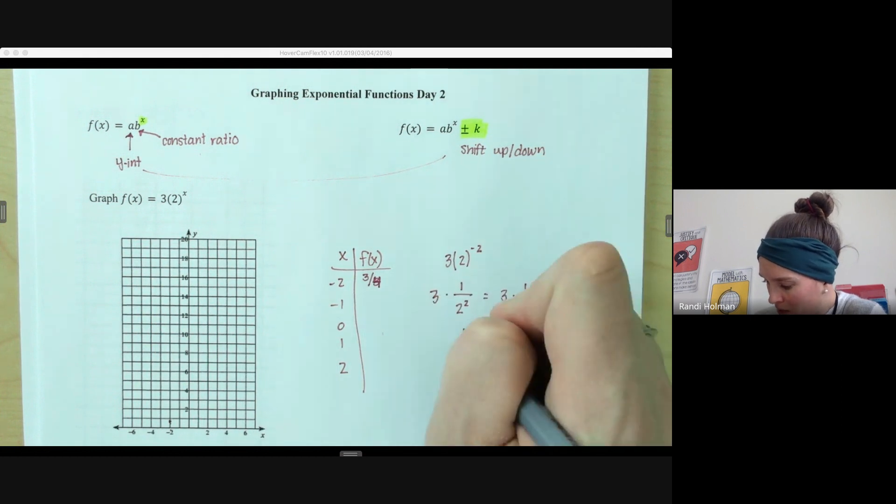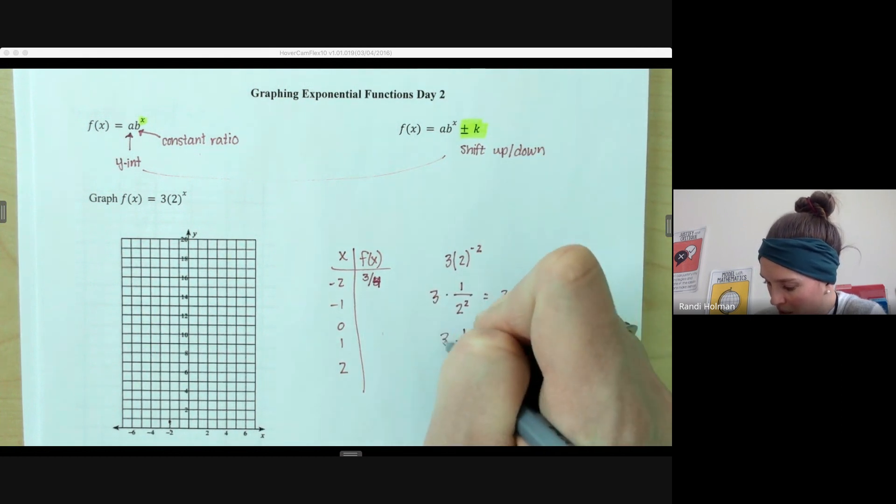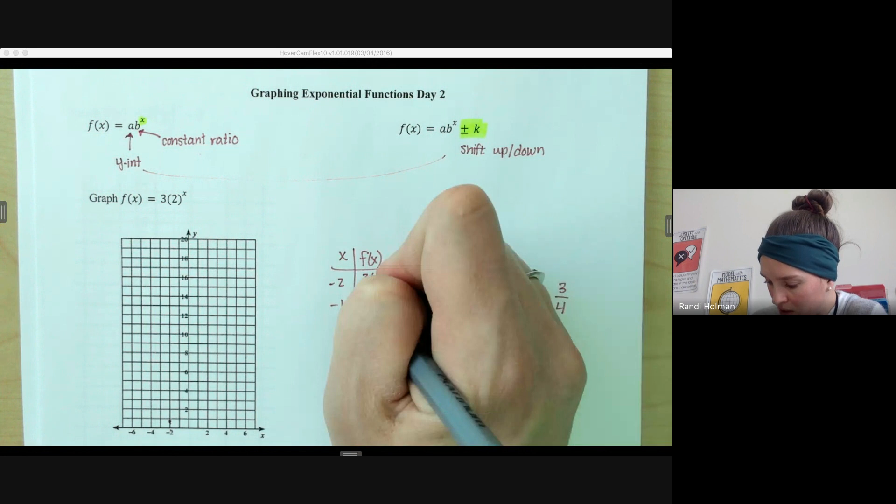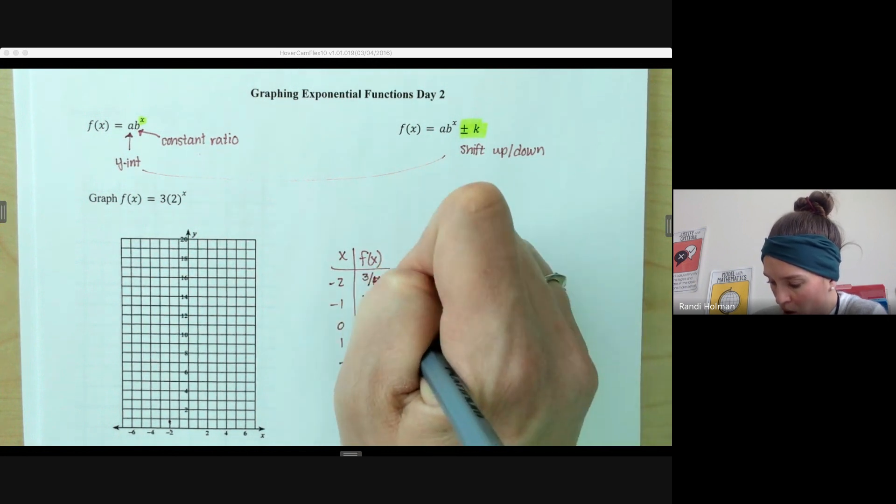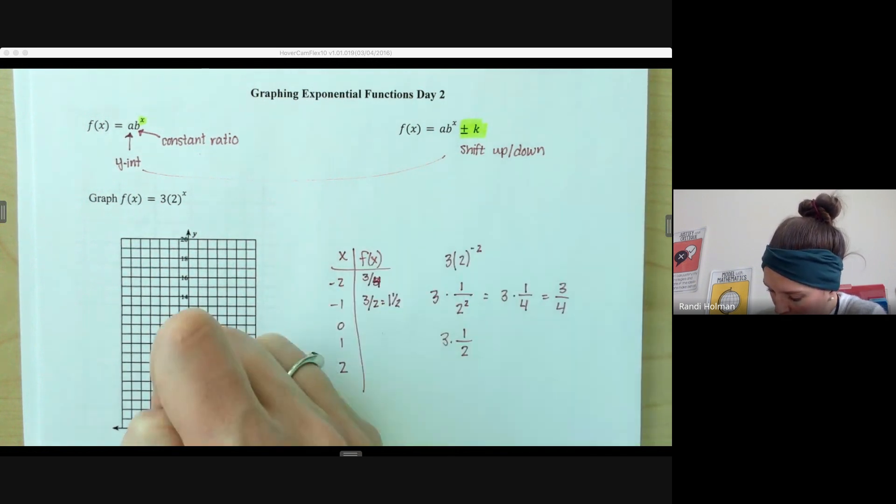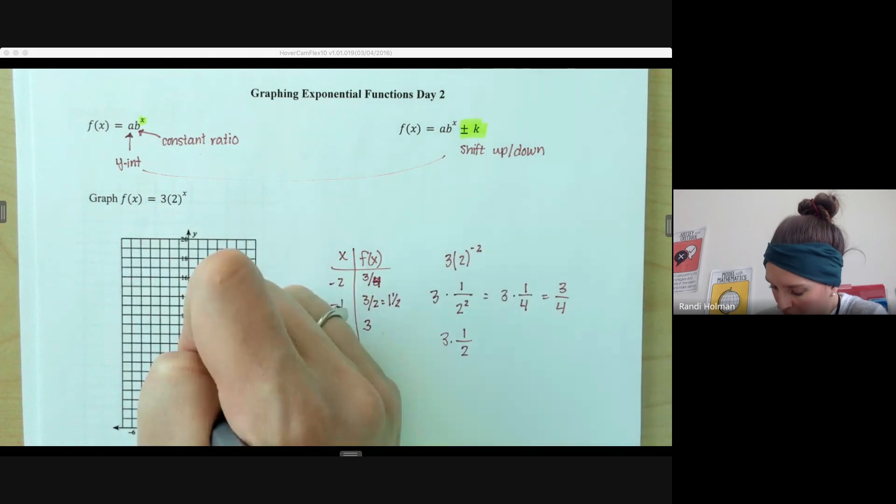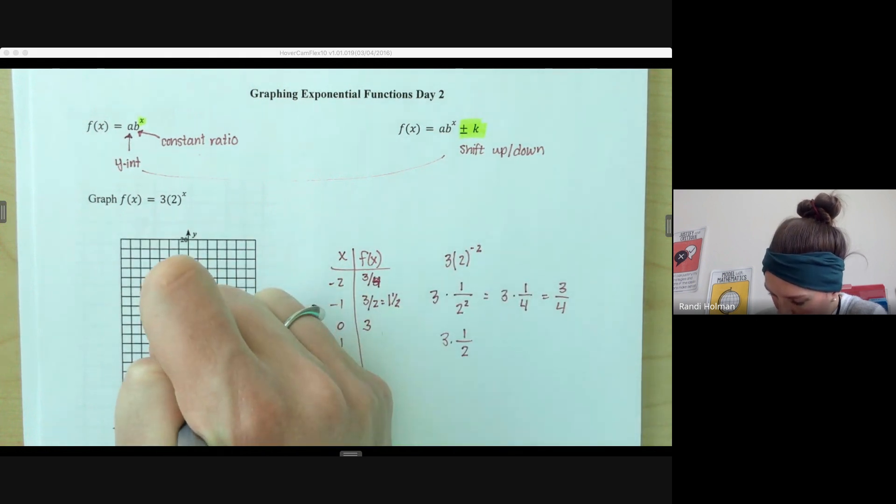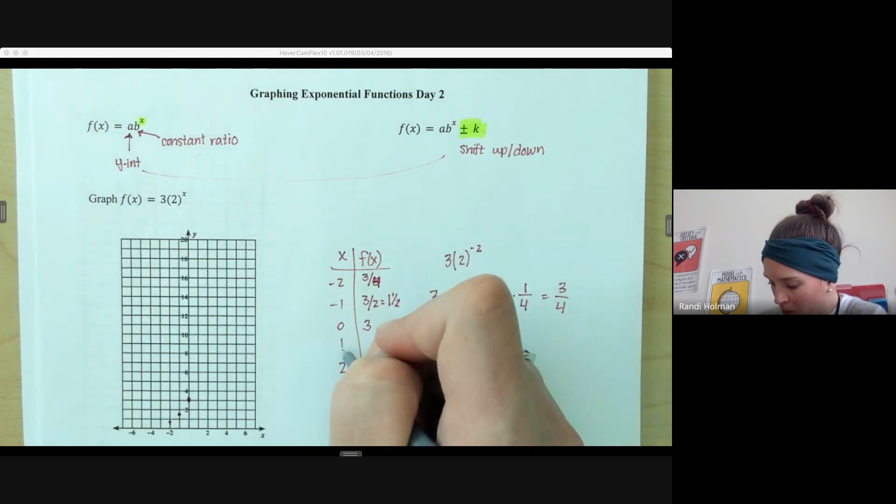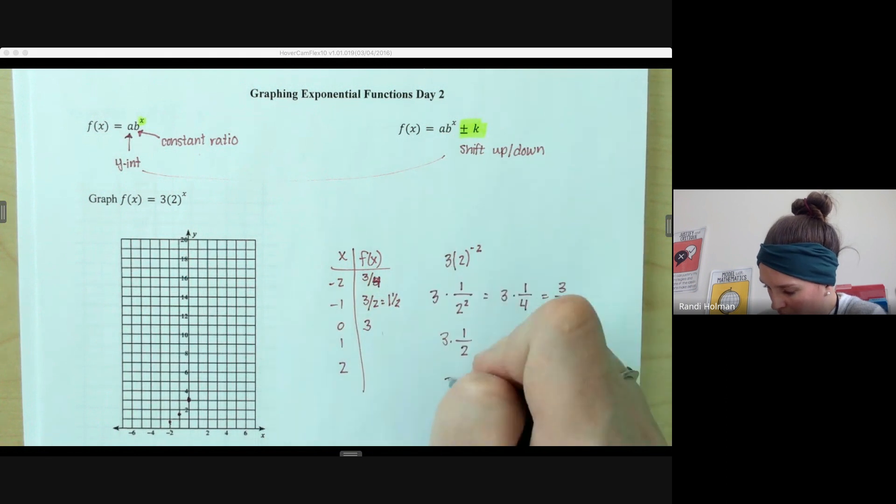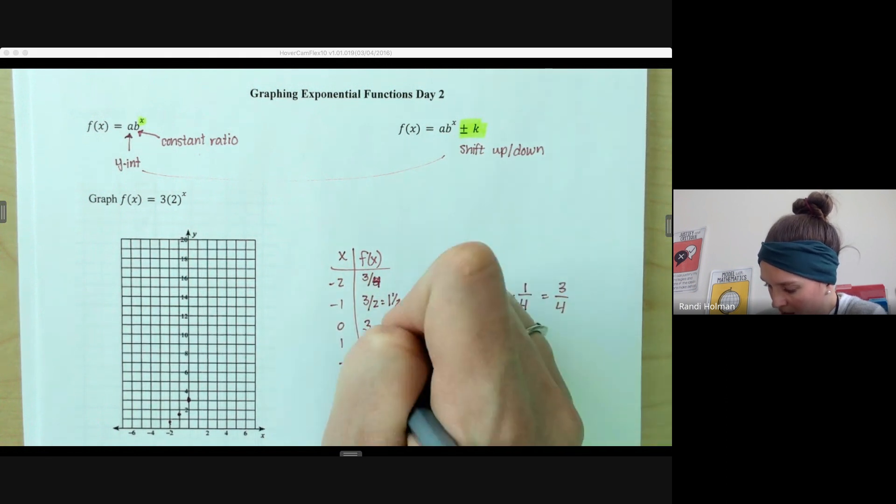Negative 1, again, we're going to go to the denominator. So we have 3 times 1 half, which is 3 halves or 1 and 1 half. So at negative 1, we're at 1 and 1 half. And at 0, we should be at 3. So we're here. And at 1, we're taking 3 times 2 to the 1, that's 6.